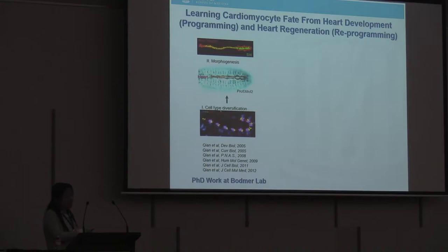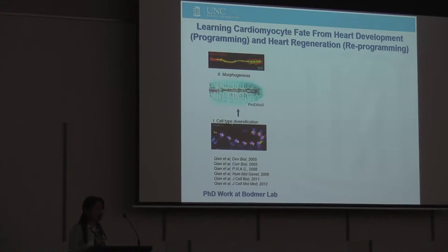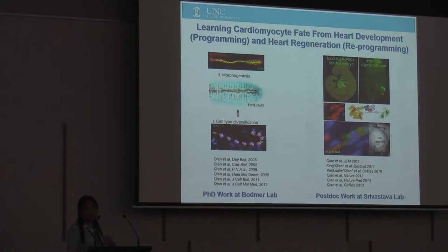I have been really obsessed with this question since when I was a grad student, during the time I was using fruit fly as a model organism to study how the progenitor cells — cardiac progenitor cells — were specified and differentiated to form a functional beating heart tube.